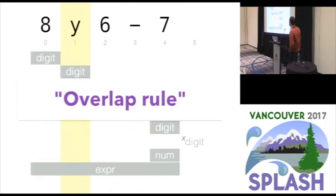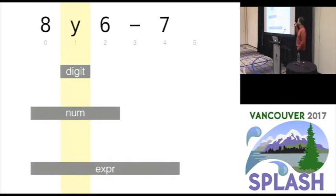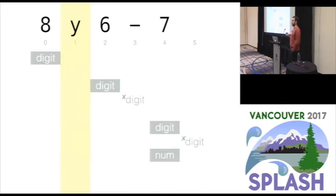And we need to remove any entries that would now be inconsistent with parsing from scratch. And the simplest thing we can do is what we call the overlap rule. And that is that any memo table entry that consumed the characters that changed, this stuff clearly we need to reevaluate, right? We no longer have a digit in position 1, so we can see that that will now fail. That means that our num will no longer consume the first three characters. And the expression may or may not consume the entire input now.